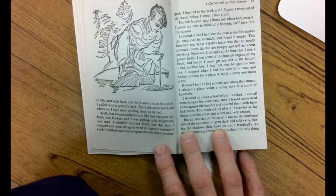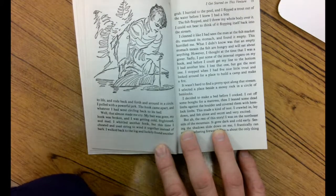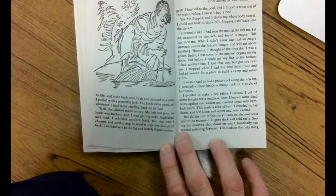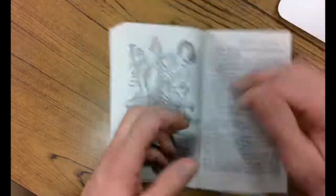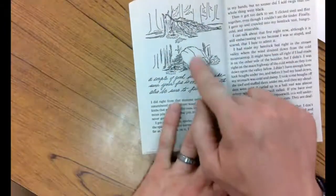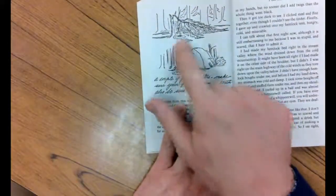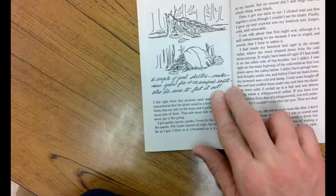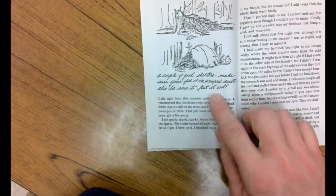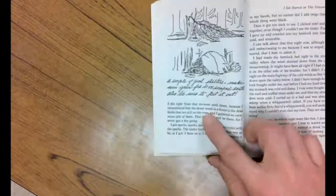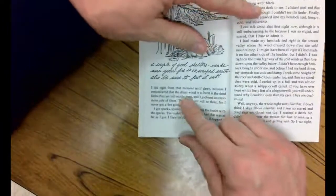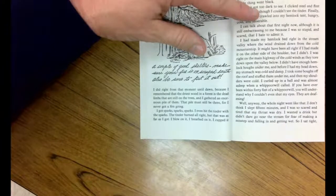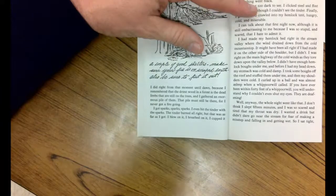But, the rest of the story. I was on the northeast side of the mountain. It grew dark and cold early. Seeing the shadows slide down on me, I frankly ran around gathering firewood. This is about the only thing. Here's some nice pictures. There's this big rock where he stacked this stuff up against, and here's where he's going to try to build a little fire. A couple of good shelters, make sure your fire on scraped earth, also sure to put it out. I did right from the moment until dawn. Because I remember that driest wood in the forest is the dead limbs that are still on the trees, I gathered an enormous pile of them. That pile must still be there, for I never got a fire going.